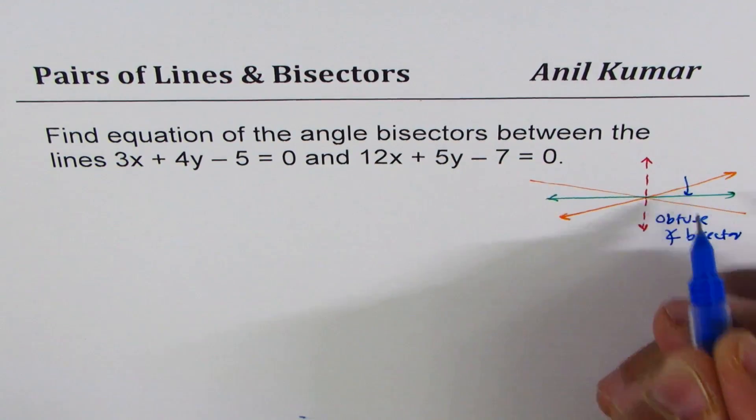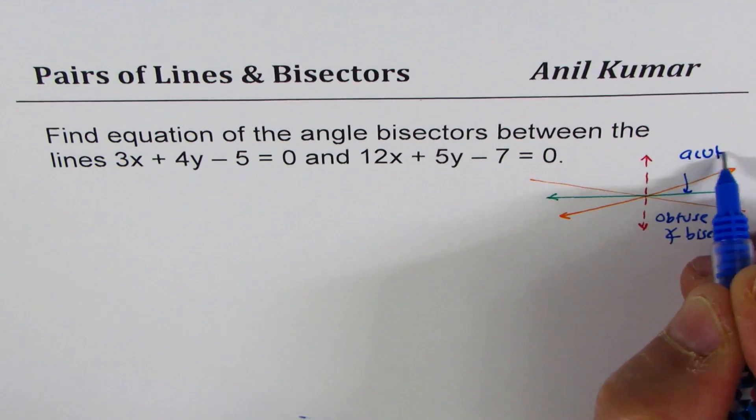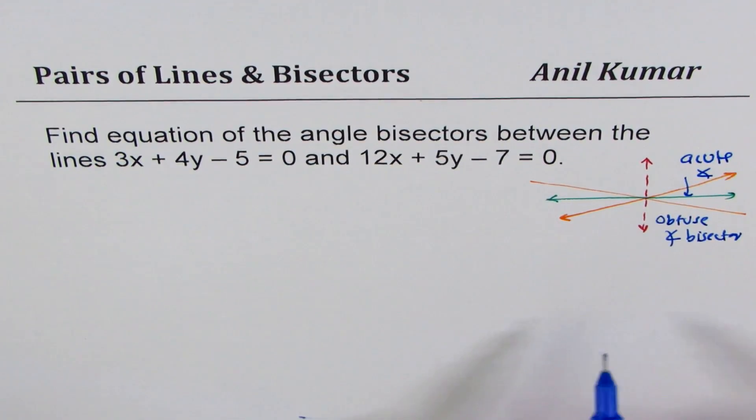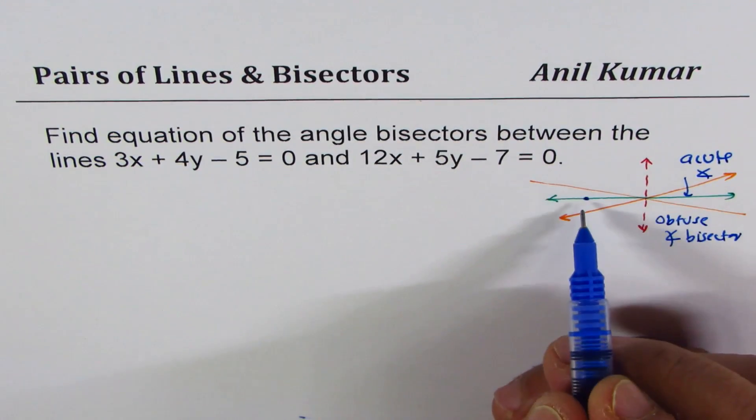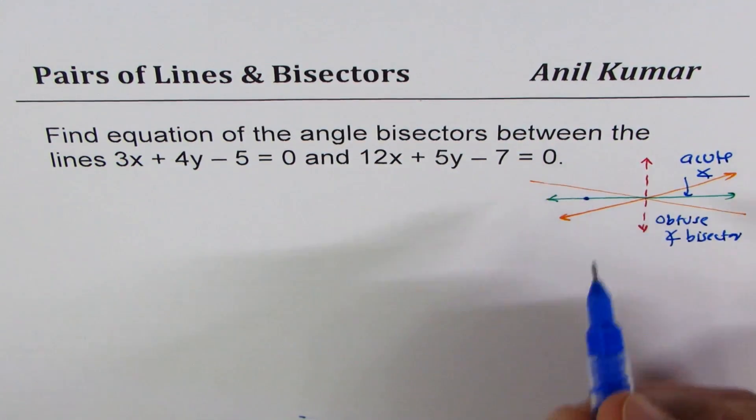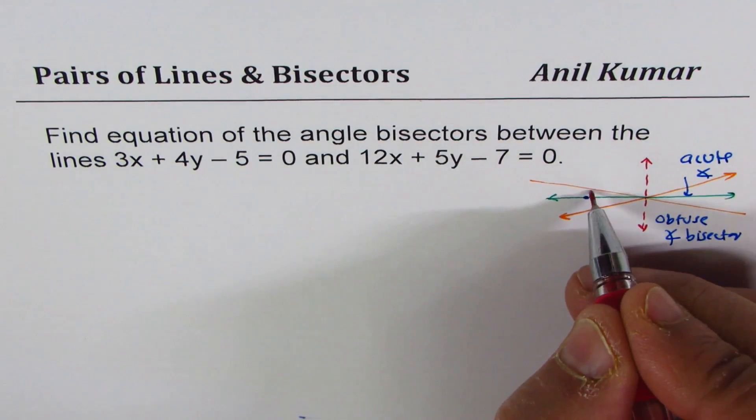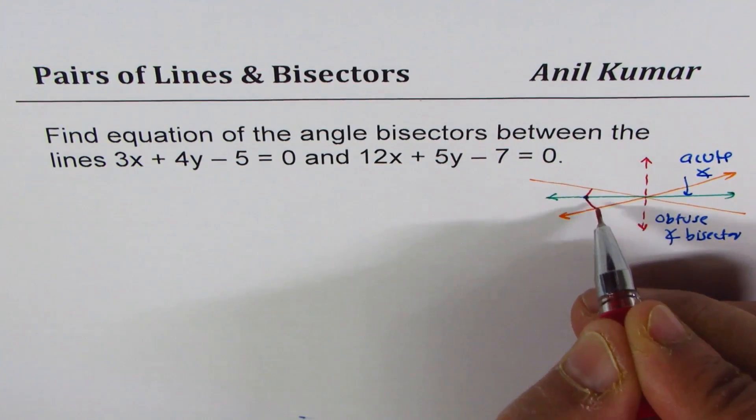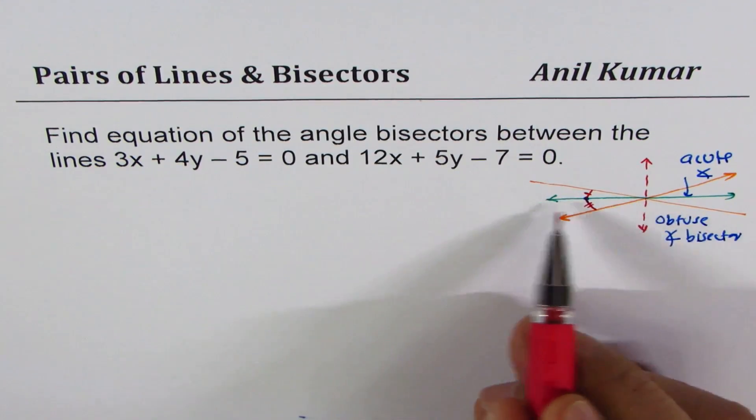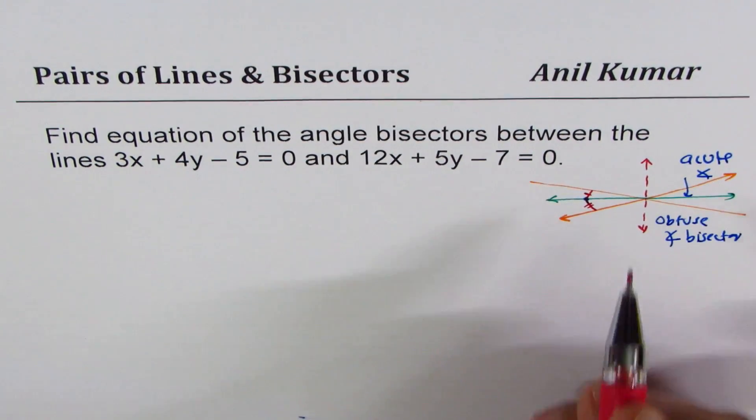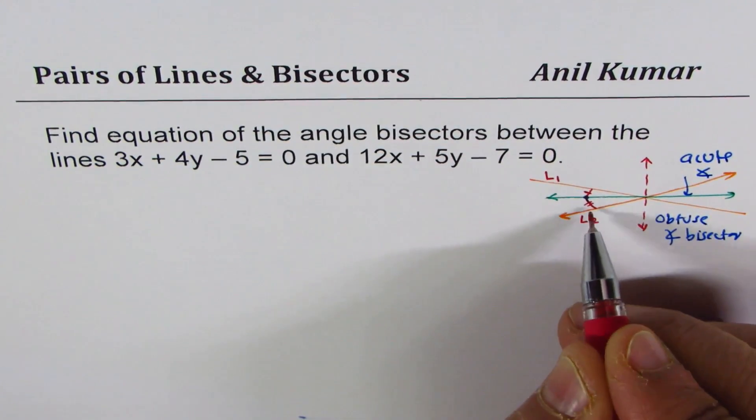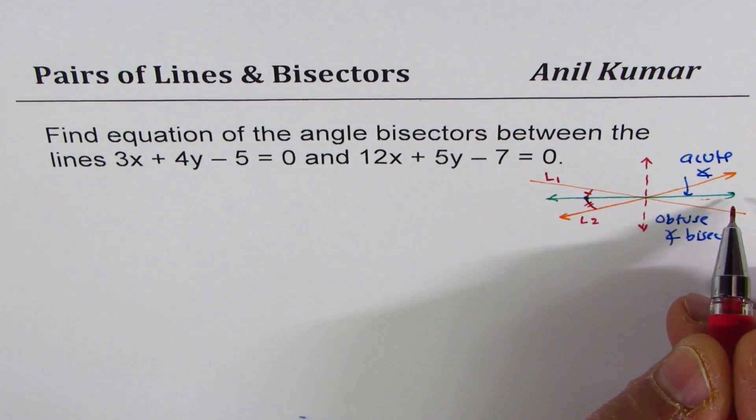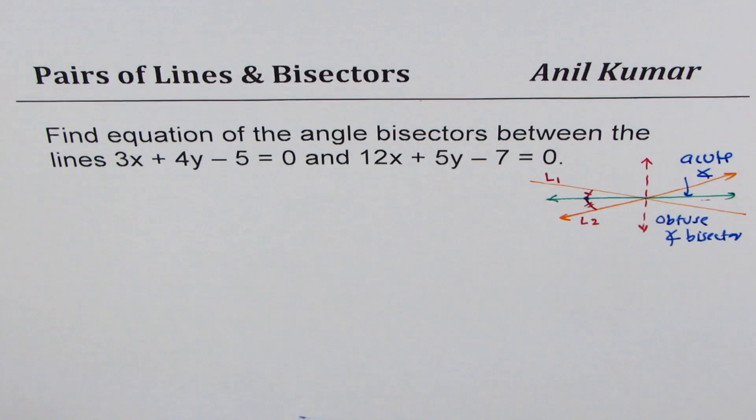The shortest distance from a point to a line is always normal to the line. These distances should be equal when the point is on the bisector. So we'll find the distance to line one and distance to line two, equate them, and get the equation of the angle bisector.